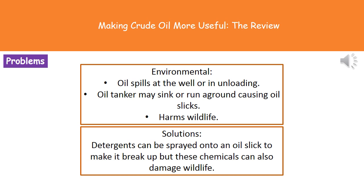The second environmental problem is when oil is being transported in oil tankers — the big ships carrying huge amounts of oil — which could sink or run aground. At that point, some of the oil could leak out onto the sea and cause an oil slick. Anytime we spill oil, we're at risk of harming wildlife, as it can get onto birds' wings and stop them being able to fly, and create lots of problems for fish as well.